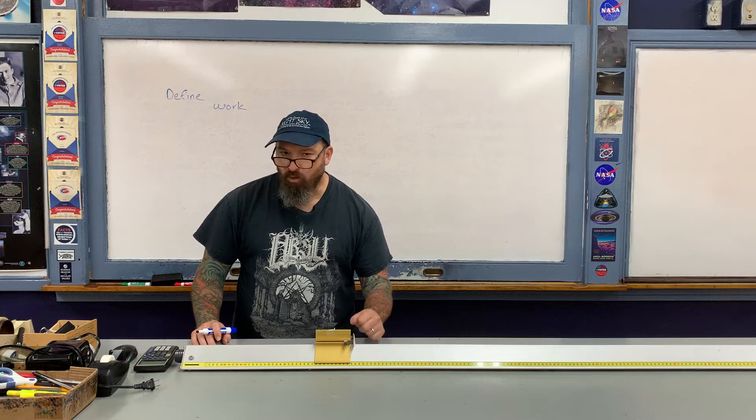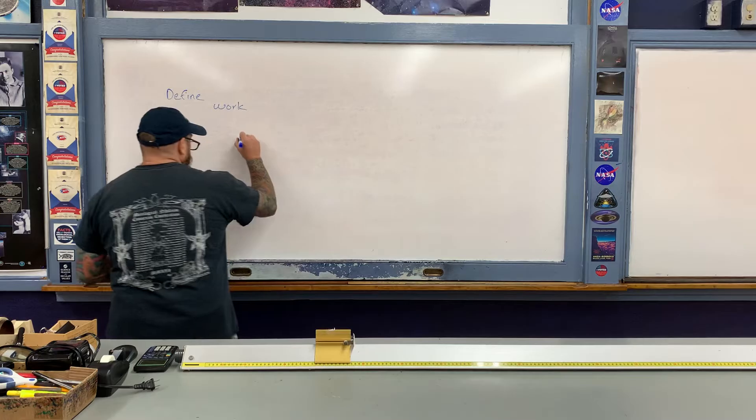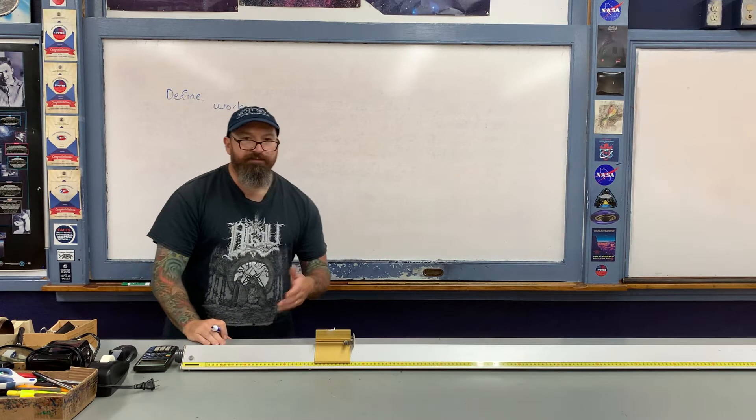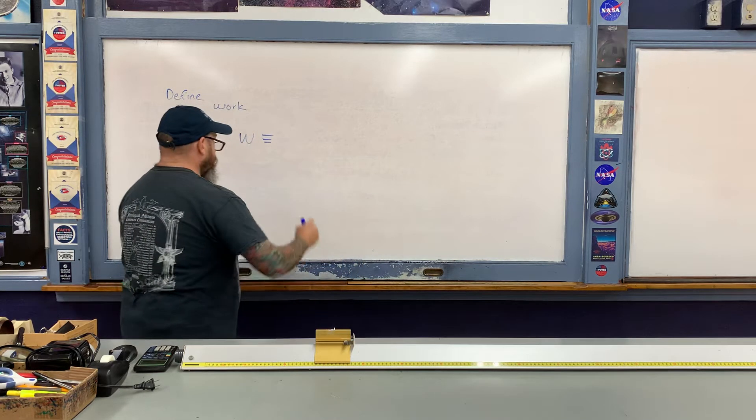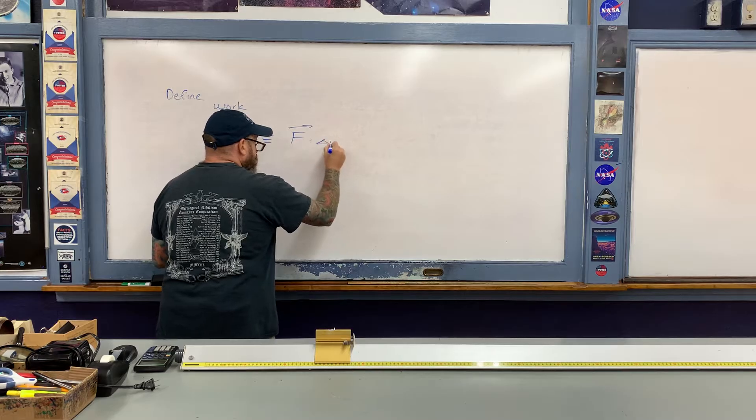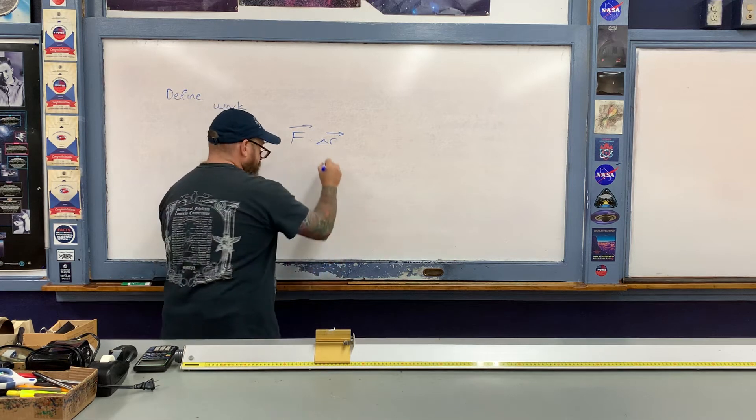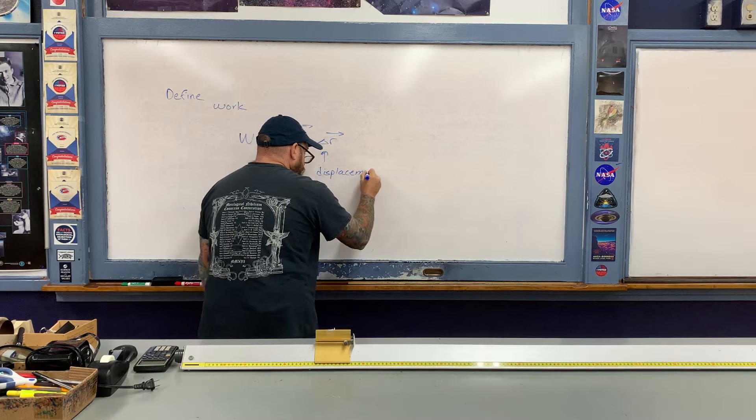There's a much more mathematically precise way of describing it. Work, which is referred to as W, by definition is equal to the following: for constant forces, it is the dot product between the force vector and the displacement vector over which the force acts.